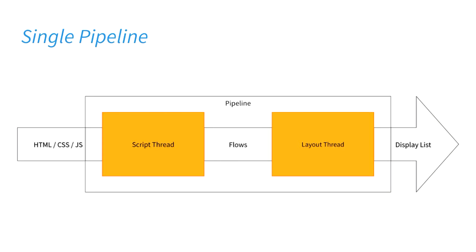A pipeline has basically two threads: a script thread that's running JavaScript code, and a layout thread which takes the result of what the script thread does — we call them flows — and turns it into display lists to be painted. The nice thing about this is if you have a page that takes a lot of work to lay out, you don't have to wait for that to finish. As soon as your JavaScript finishes processing its event, it can fire off the flows to the layout thread and go back to running the next JavaScript event, so your code gets to run faster.